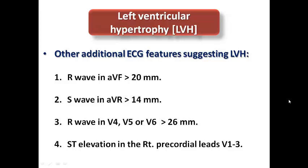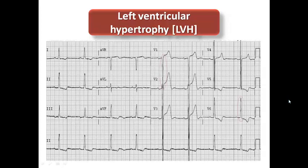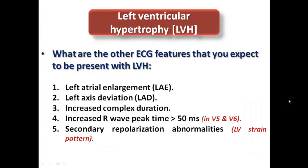There are also other additional ECG features suggesting LVH: R-wave in aVF, S-wave in aVR, R-wave in V4, V5, V6, and sometimes ST elevation in precordial leads. However, the advice is to stick to the three main features: the Sokolov-Lyon index, R-wave in aVL, and Cornell voltage criteria. For example, here the sum of S-wave in V1 and R-wave in V6 would exceed 35 mm by a large value, which can be used to diagnose LVH.